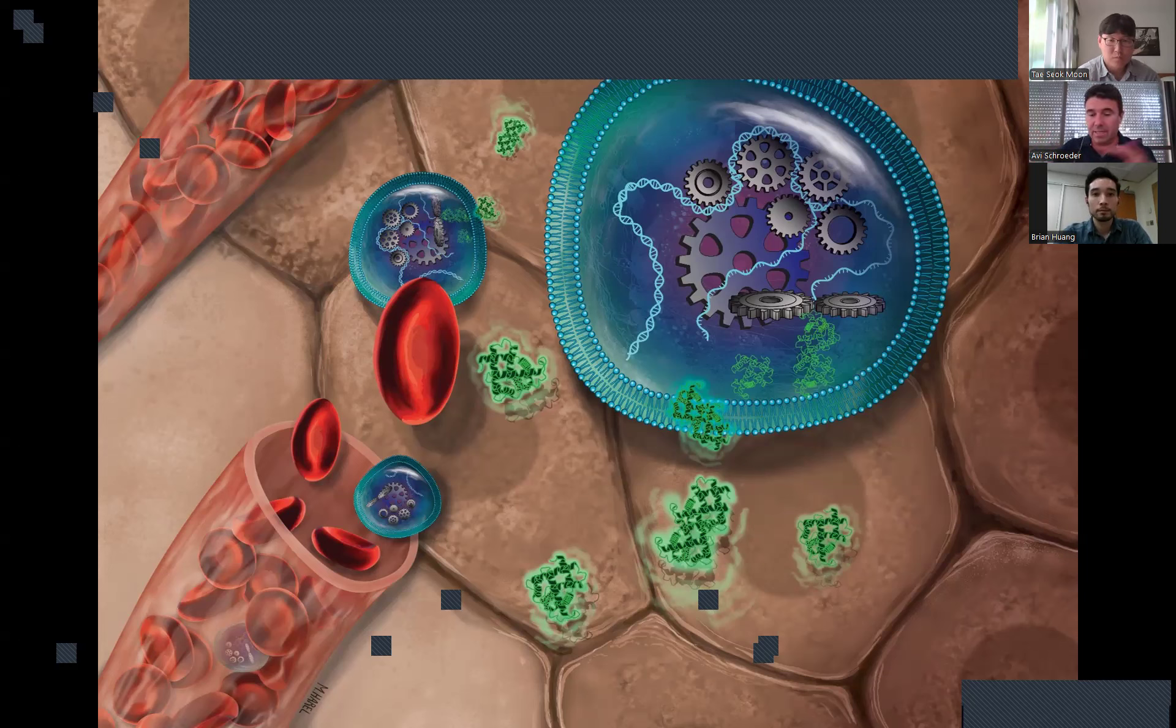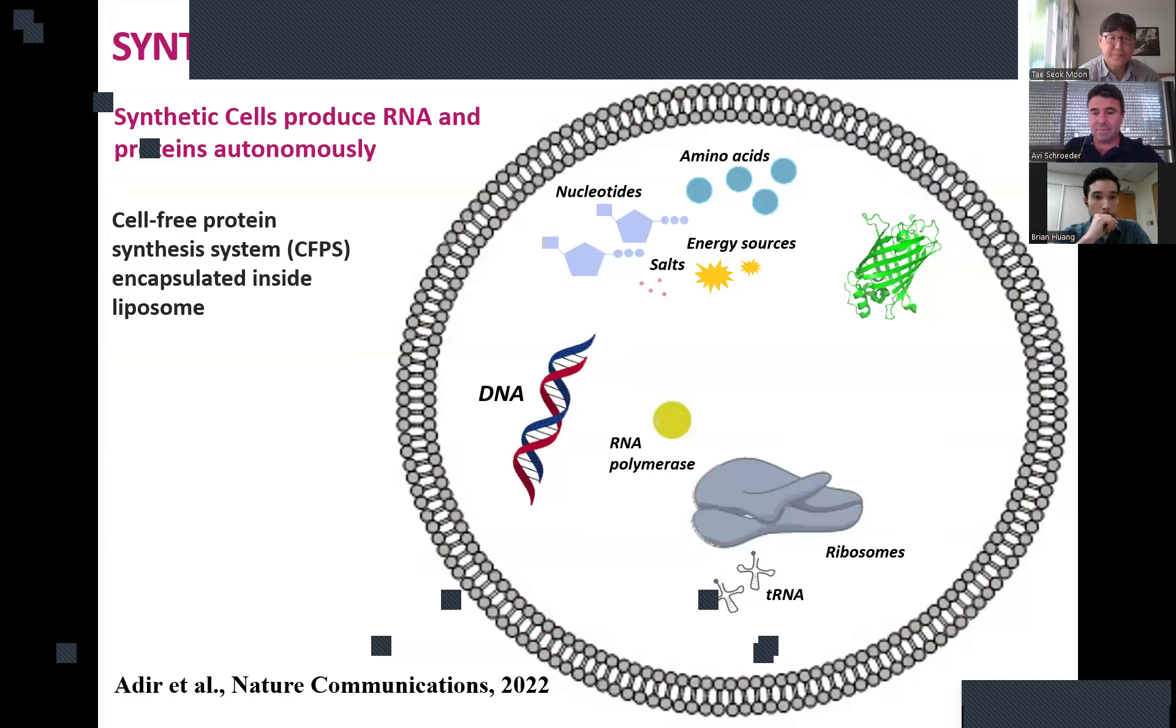For that, we need several synthetic biology tools. The way we imagine these systems is that from the outside the body, they would be camouflaged from the immune system. But from the inside, they would actually have all the molecular machines necessary for producing therapeutic agents such as proteins or RNA inside the body wherever they're necessary.